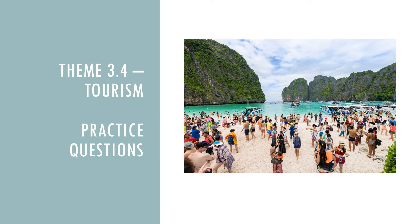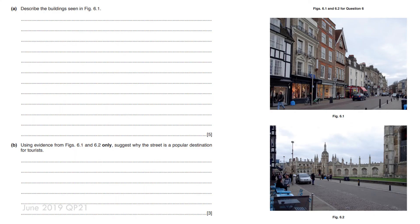Here are some practice questions. The resources are linked in the comments so you can print them off in your own time. Look at the question, pause the video, and have a go. The top question is more to do with settlements, while the bottom one is purely about tourism as a destination. Describe the buildings and what you can see — keep it simple. It's eight marks, so allow about 10 minutes.